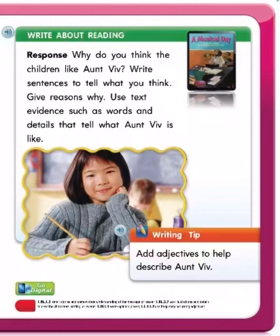Write about reading. 4. Why do you think the children like Aunt Viv? Write a sentence to tell what you think. Give reasons why. Use text evidence such as words and details that tell what Aunt Viv is like. Writing tip: add adjectives to help describe Aunt Viv.